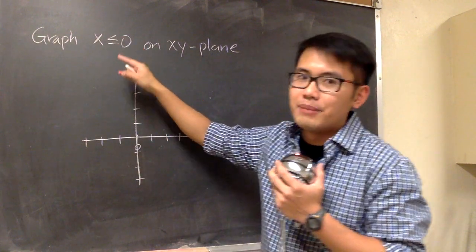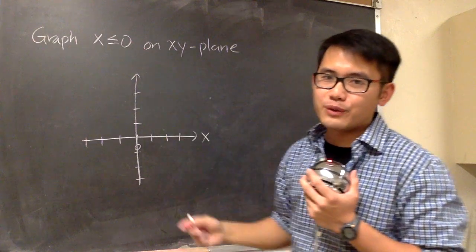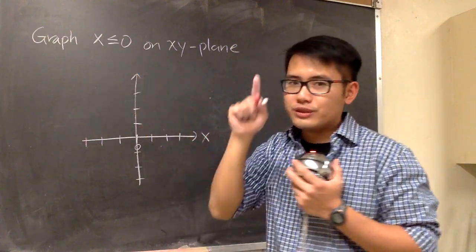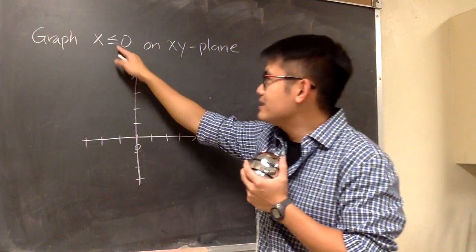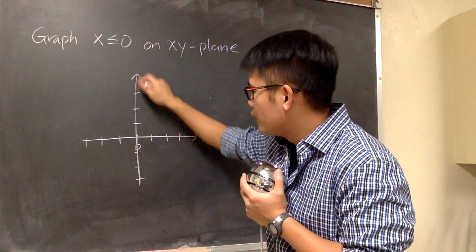This is going to be a solid line because we do have that equal sign. Otherwise, we have to use the dashed line. But anyways, this is going to be a solid line right here.